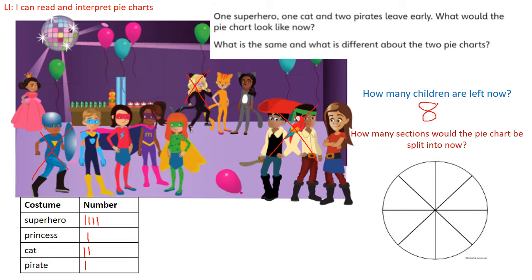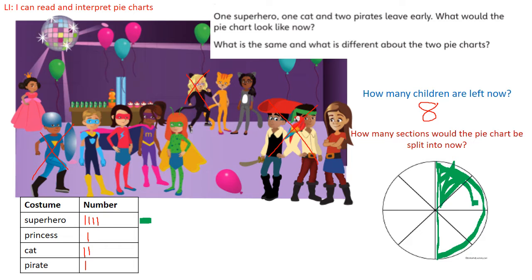Let's have a look at what our pie chart would look like this time. We used green for the superheroes. Let's change to a highlighter and make it green. So how many superheroes have we got now? We've got four. So therefore we need to colour in four of our pie chart pieces. I've done enough to show you that we now have four superheroes marked.